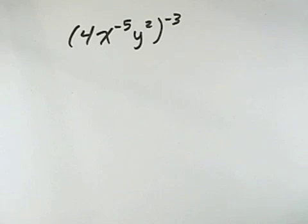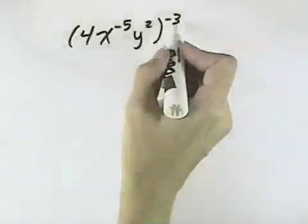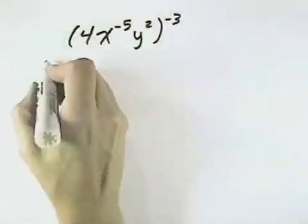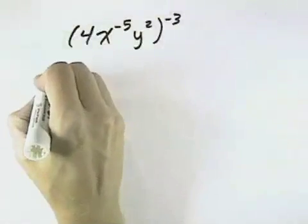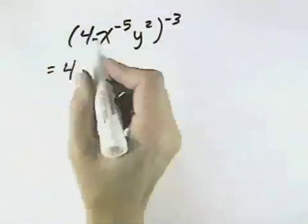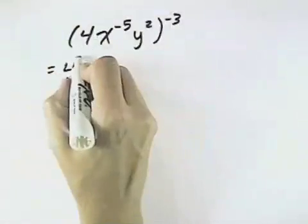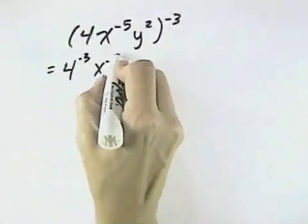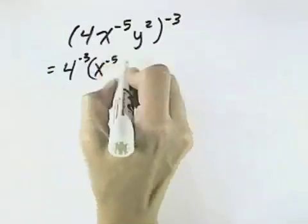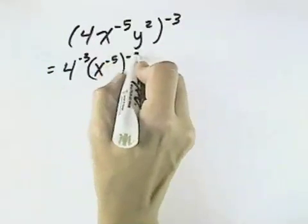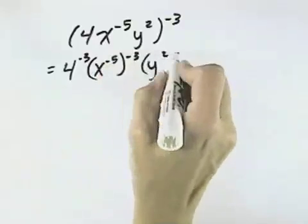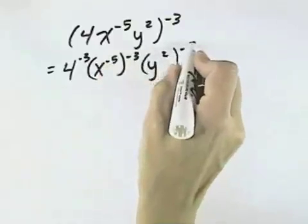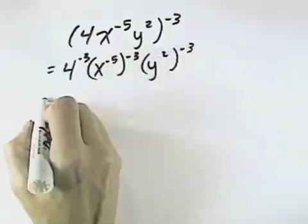We want to simplify this exponential expression. Since we have an exponent on the outside, we can actually distribute that through, or raise each factor on the inside: the 4 to the negative third power, the x to the negative fifth can be raised to the negative third power, and the y to the second can be raised to the negative third power.